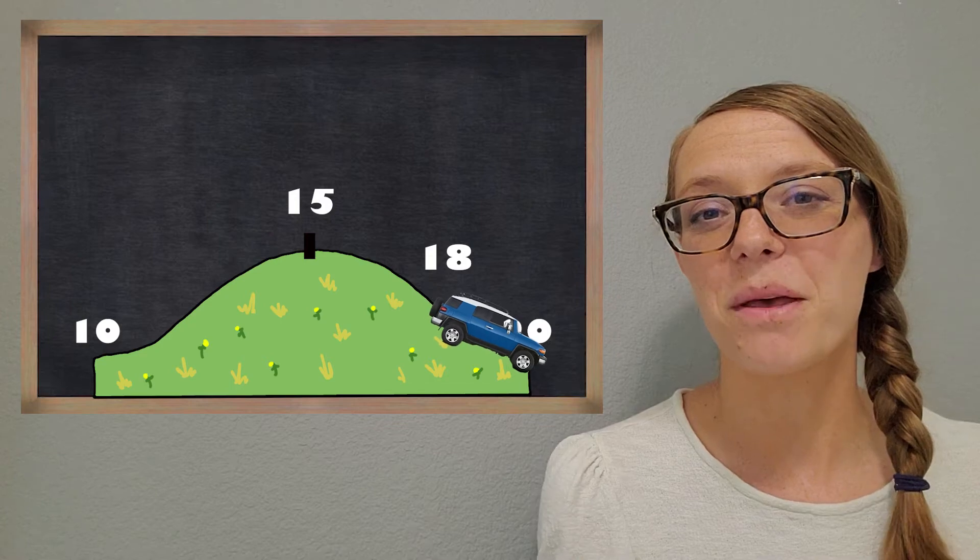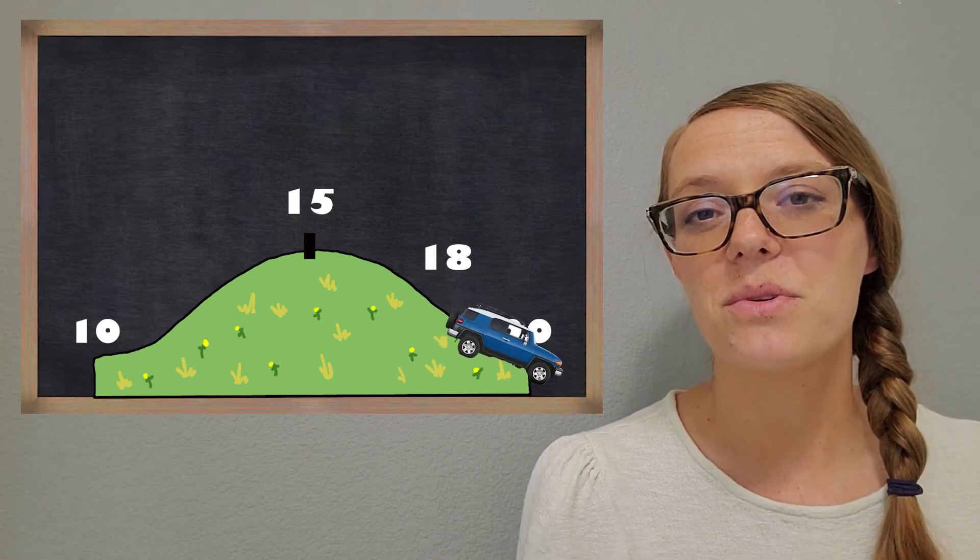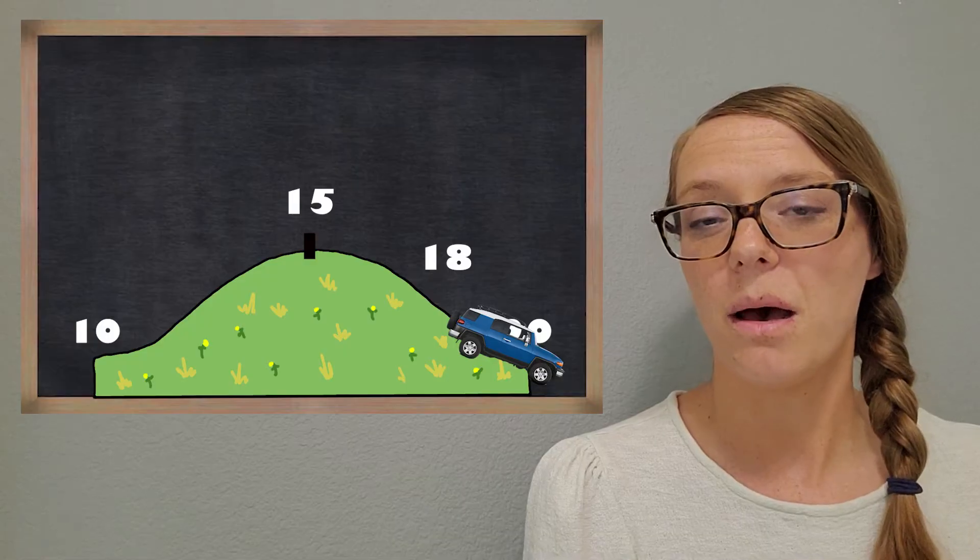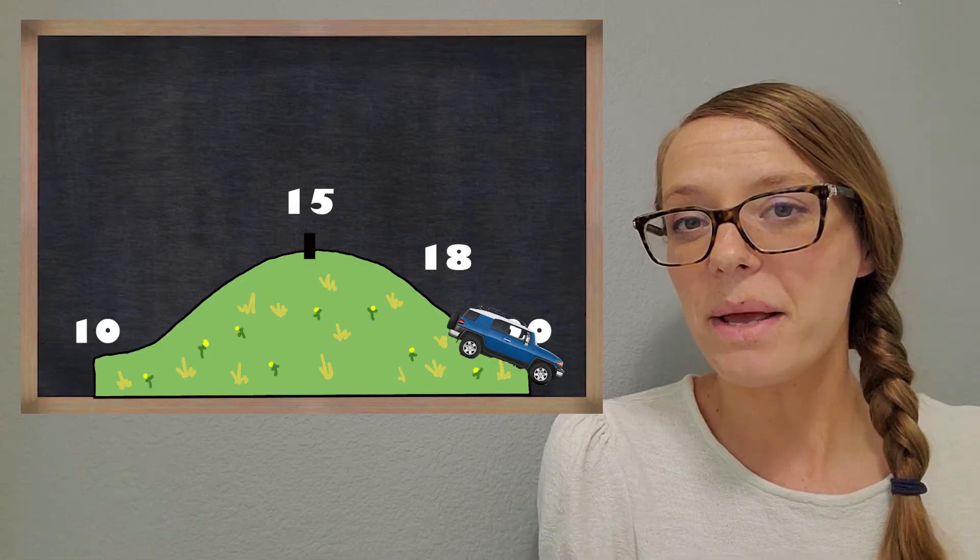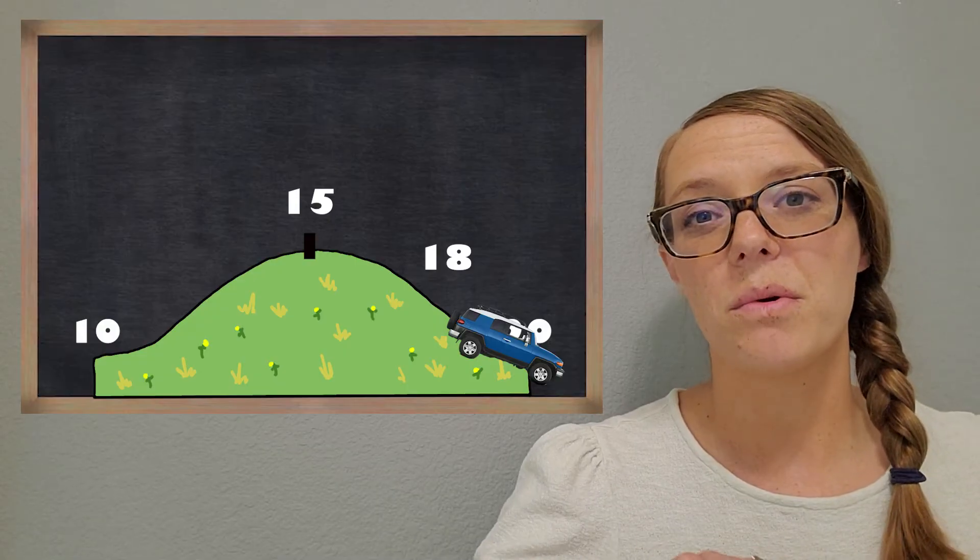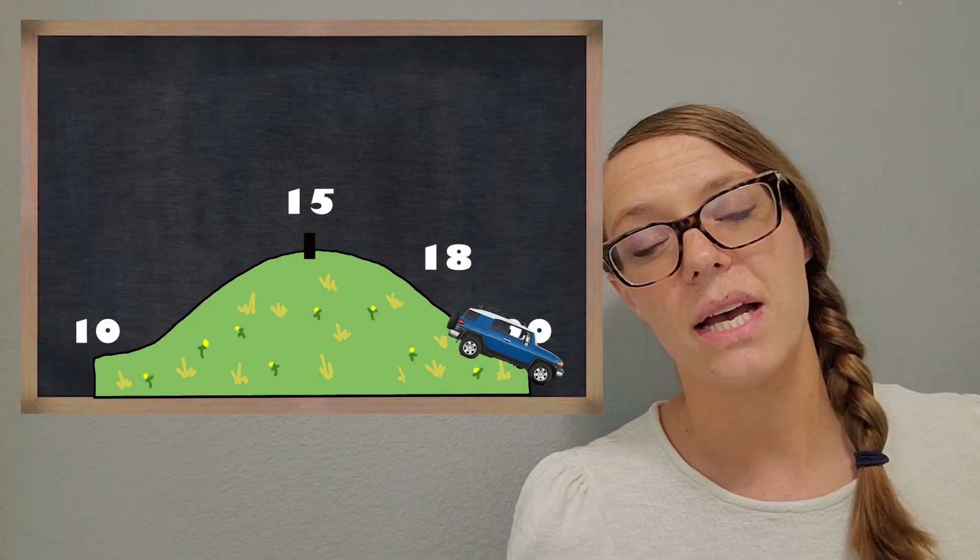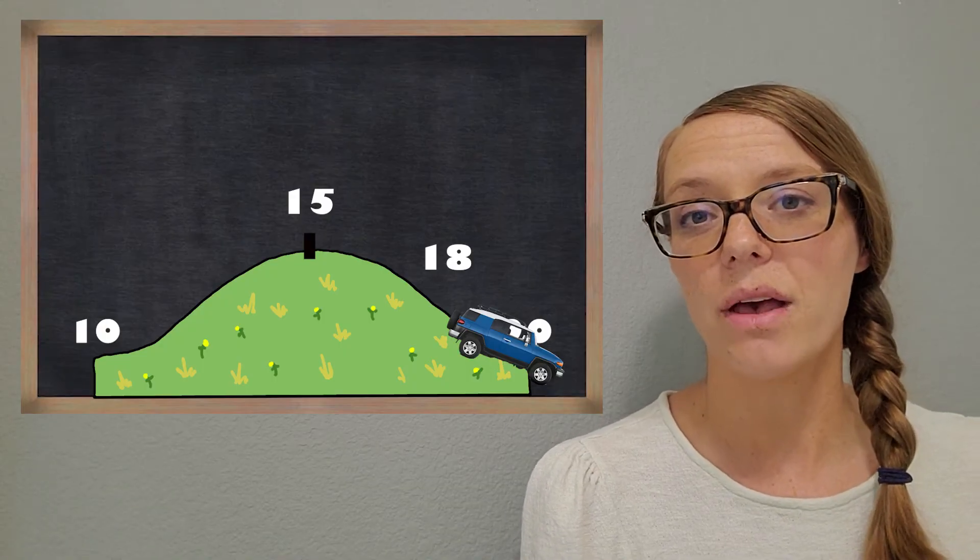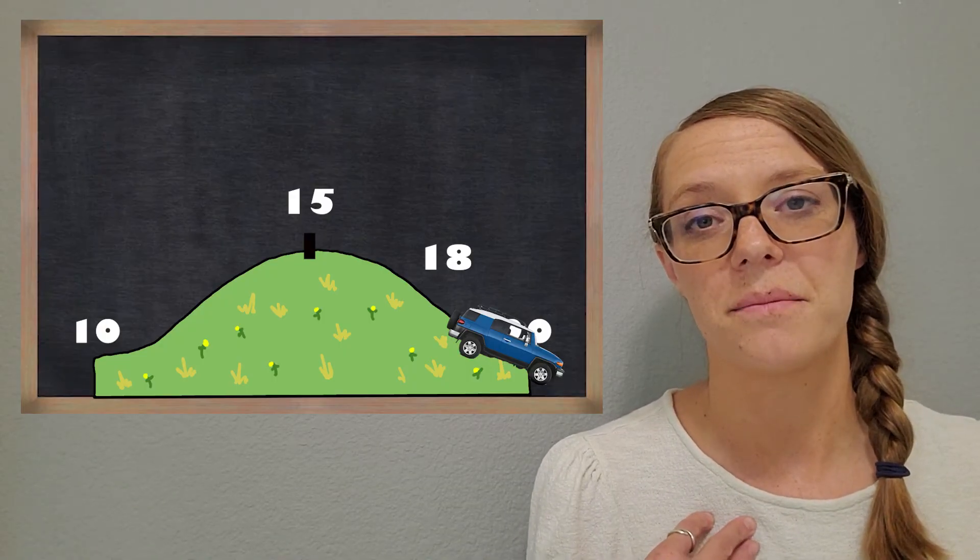You got it. We would roll up to the 20. So we would round from 18 up to 20. And it kind of makes sense because 18 is closer to 20. We wouldn't want to round it all the way back down to the 10. It's a lot closer to the 20. So that hill kind of helps me think about that.